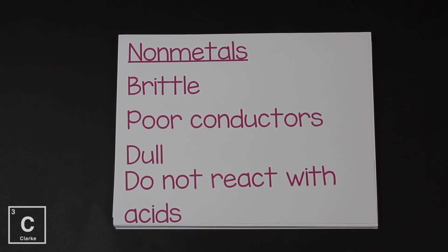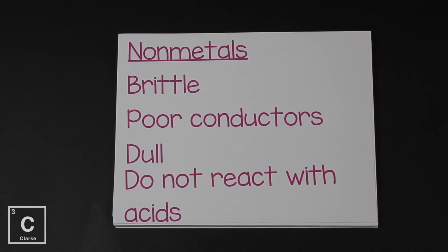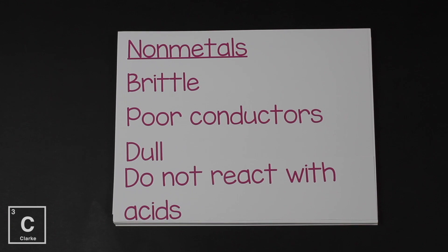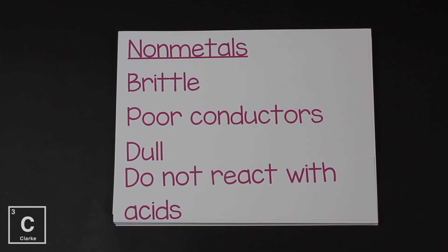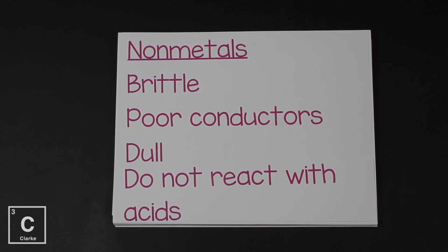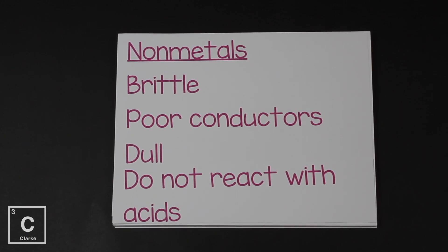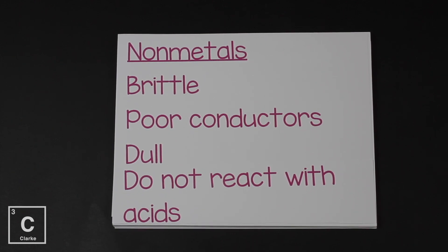Let's skip to non-metals. Non-metals are like the opposite of metals, and all their properties are exactly the opposite. They're brittle - if you hit them with a hammer, they shatter into pieces. They're poor conductors of heat and electricity. They're dull, not shiny, and they do not react with acid. You really only have to memorize one set of properties because the other is the complete opposite.